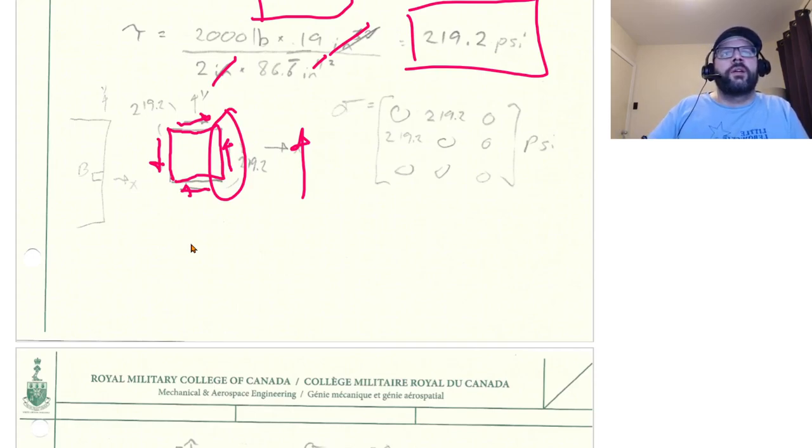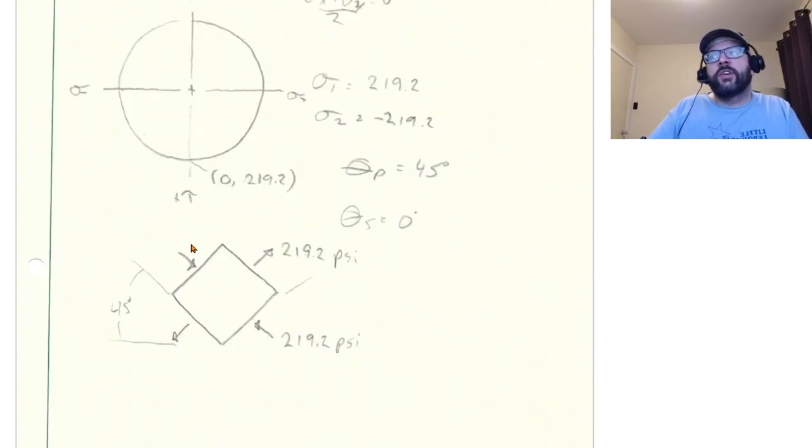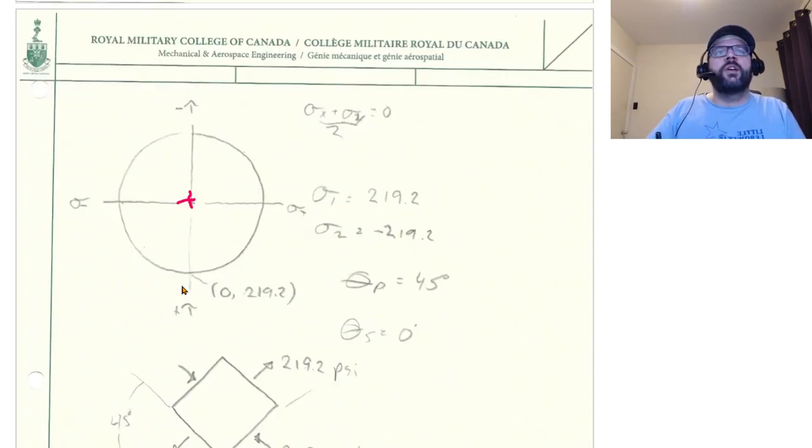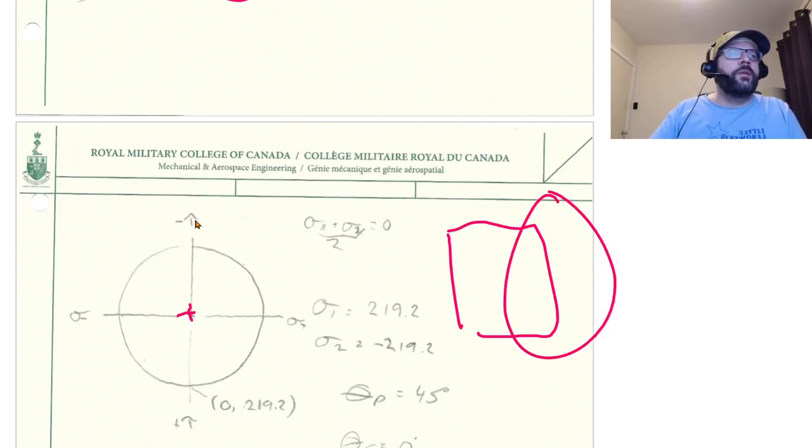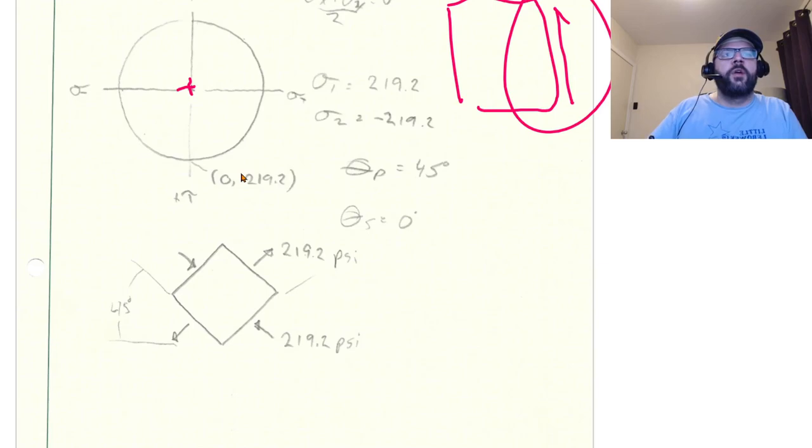So again Mohr's circle is pretty easy when the shear stress is the only stress. Where is our centroid? Well, sigma x plus sigma y divided by 2, 0 plus 0 divided by 2 is 0, so the center of our Mohr's circle is at the origin. The radius of our Mohr's circle is just the magnitude of the shear stress because when we look at this face right here, we have a positive shear stress on that face and we have no other stresses on that face which places us right here on Mohr's circle down at the bottom there.